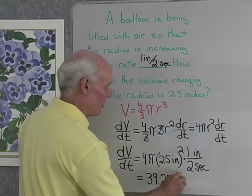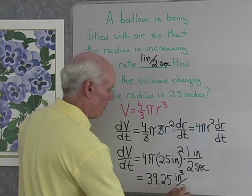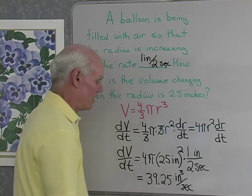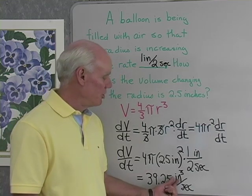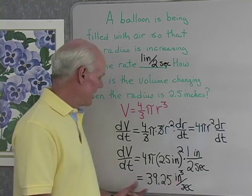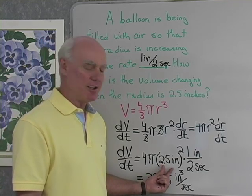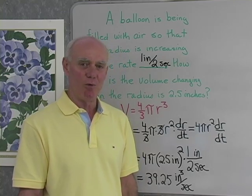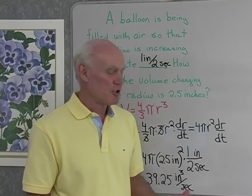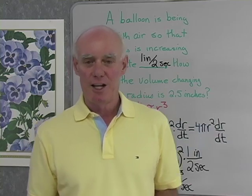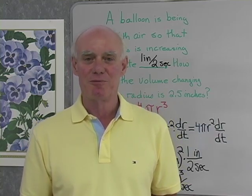what do I have for units? Inches squared times inches, so inches cubed, over seconds. So 39.25 cubic inches per second, that's my rate of change of the volume when the radius is 2.5 inches, if the radius is increasing at the rate of 1 inch per second. So that's a quick look at a problem that we call a related rate problem from calculus.